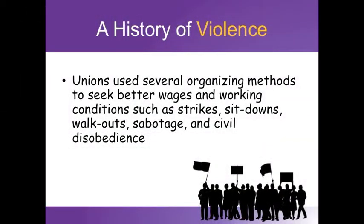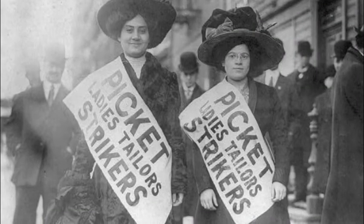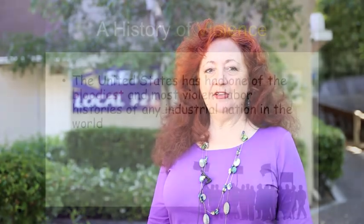Unions used several organizing methods to seek better wages and working conditions. Their tactics involved strikes, sit-downs, walkouts, sabotage, and civil disobedience. For approximately 150 years, union organizing efforts and strikes were violently opposed by police, National Guard units, and the United States Army. The United States has had one of the bloodiest labor histories of any industrialized nation in the world.